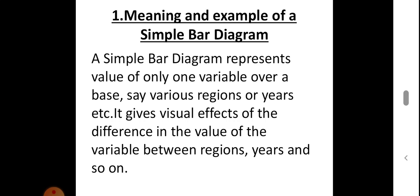Now, meaning and example of simple bar diagram. When the values of a variable for different places, times, or things are given, a simple bar diagram is drawn. A simple bar diagram represents the value of only one variable over a base — for example, various regions or years. It gives a visual effect of the difference in the value of the variable between regions, years, and so on.